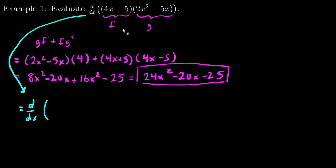I would do the algebra first, inside here, before I do the calculus derivative. So, multiplying this through, 4x times 2x^2 is 8x^3. 4x times -5x is minus 20x^2. 5 times 2x^2 is plus 10x^2. And, 5 times -5x is minus 25x.